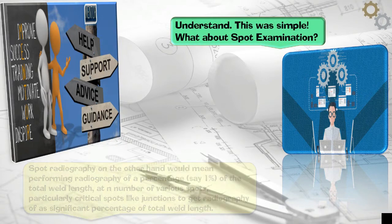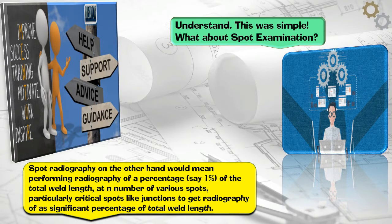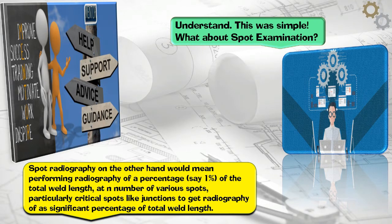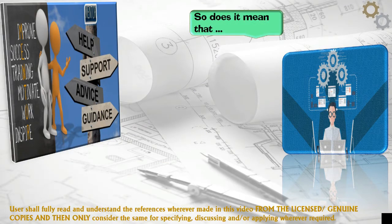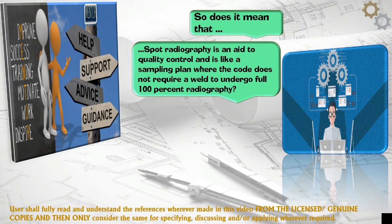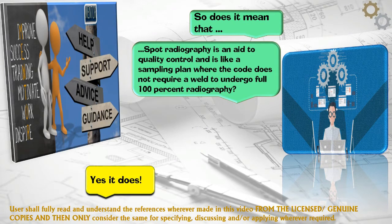What about spot examination? Spot radiography, on the other hand, would mean performing radiography of a percentage — say 1% of the total weld length — at a number of various spots, particularly critical spots like junctions, to get radiography of a significant percentage of total weld length. So does it mean that spot radiography is an aid to quality control and is like a sampling plan where the code does not require a weld to undergo full 100% radiography? Yes, it does.